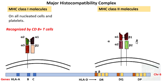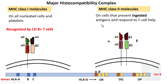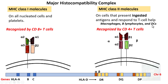MHC class 2 molecules are present on cells that present ingested antigens and respond to T cell help — these include macrophages, B lymphocytes, and dendritic cells. They are recognized by CD4-positive helper T cells. The main function of MHC class 2 is to present exogenous antigens derived from extracellular pathogens. The antigens are not bound externally; rather, macrophages ingest them, process them internally, and then display them on the MHC class 2 molecule for recognition by CD4-positive T cells.